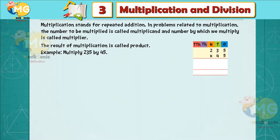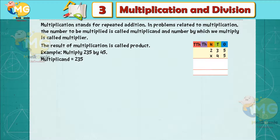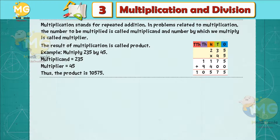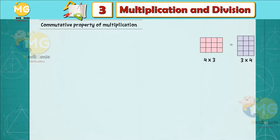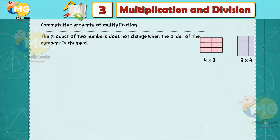Example: Multiply 235 by 45. Multiplicand is equal to 235, multiplier is equal to 45. Thus the product is 10,575.